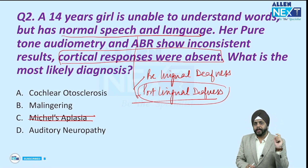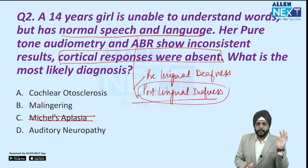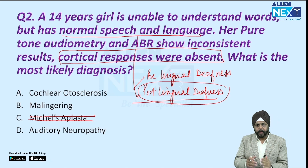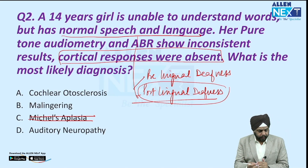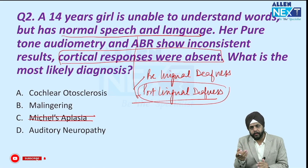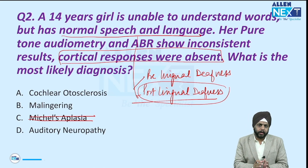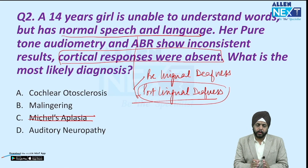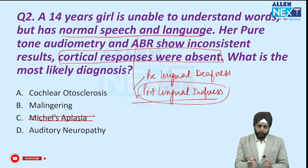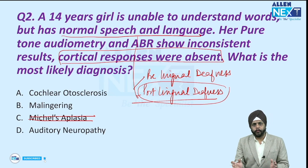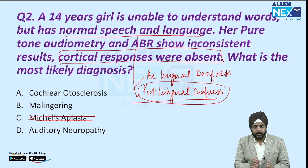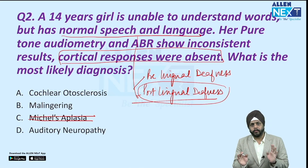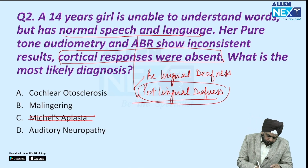This girl has a problem in ABR — the ABR results are inconsistent. If the diagnosis were malingering, the patient is saying false things. In that case, pure tone audiometry may be inconsistent because it is a subjective test. But ABR is an objective test — it will show the wave pattern: waves 1, 2, 3, 4, 5, 6, 7. These will be visible. But here ABR is also inconsistent, so malingering is also ruled out.